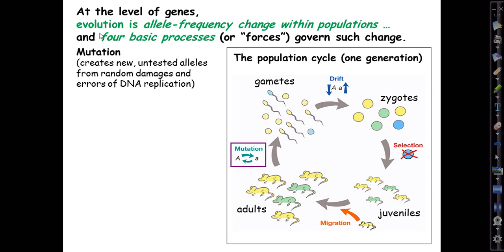The first is mutation. It's the process that creates new untested alleles from random damages and errors in DNA replication. Sometimes these are entirely new to life, other times they're just yet another version of a well-known mistake.